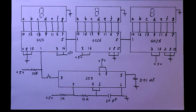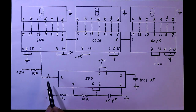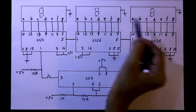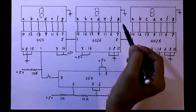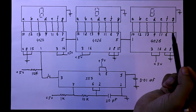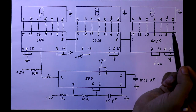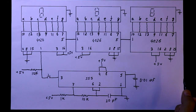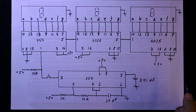So this is the circuit diagram. Now whenever we push this switch, this display will show some random number from 000 to 999. Now we will see this on the breadboard.